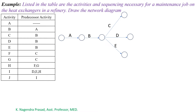Next, observe activities F and G. For these activities, the predecessor activity is C, which means after completion of activity C, F and G will start. So let's draw activities F and G after completion of C.